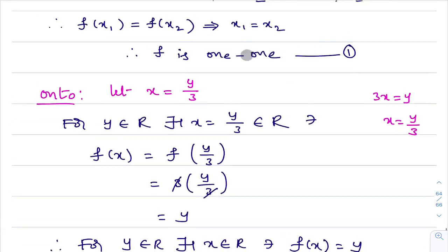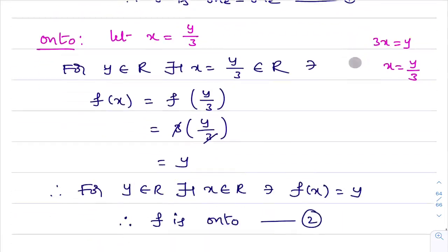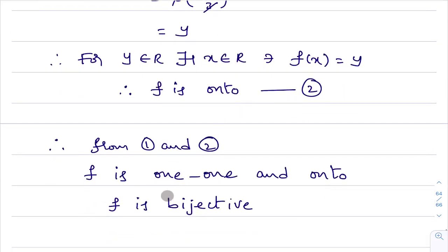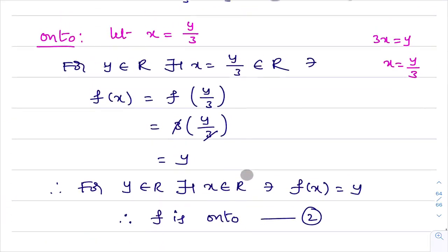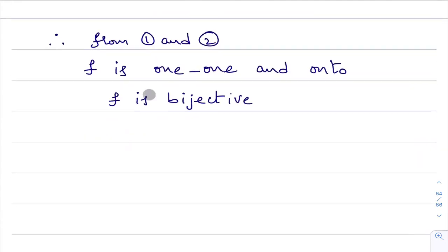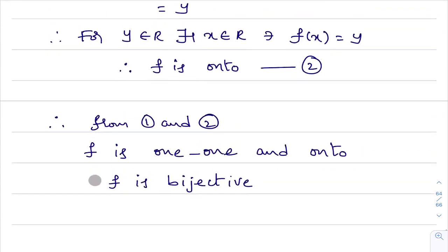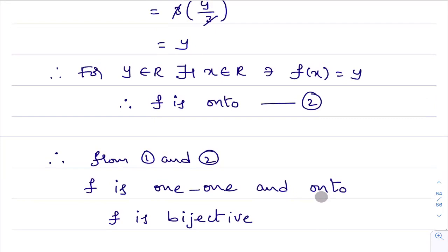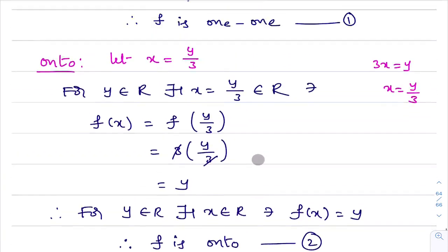This function is one-one and onto, so it is bijective. The first option — f is one-one and onto — is the right option.